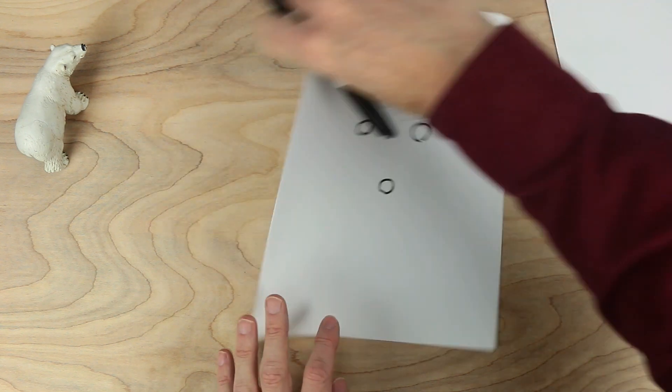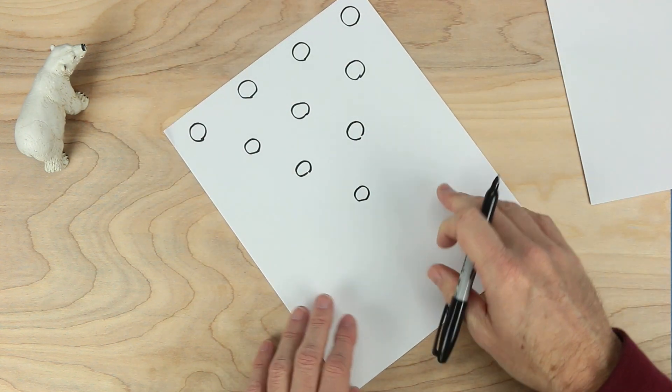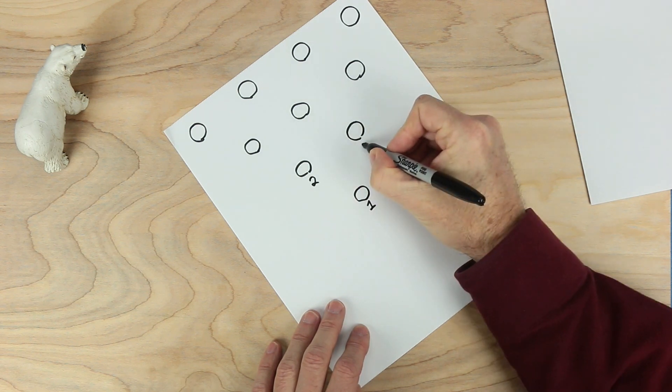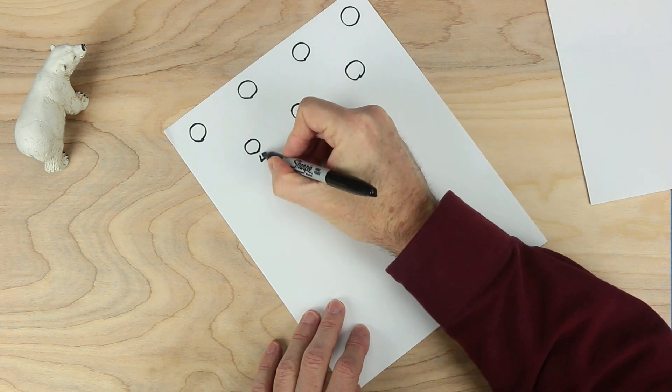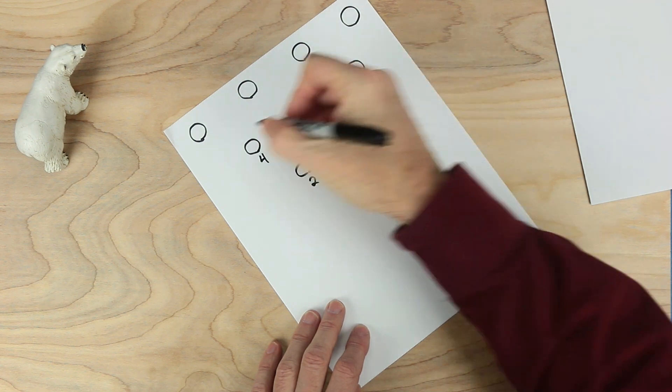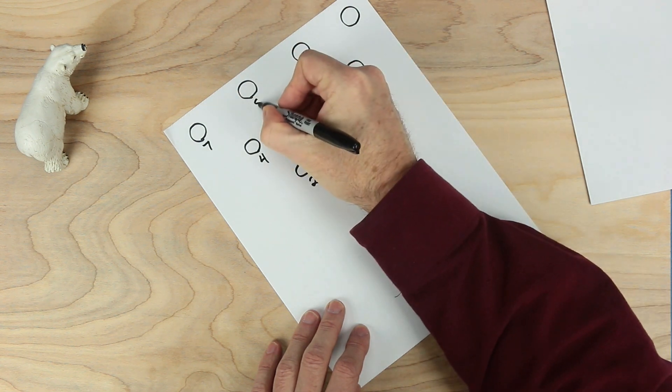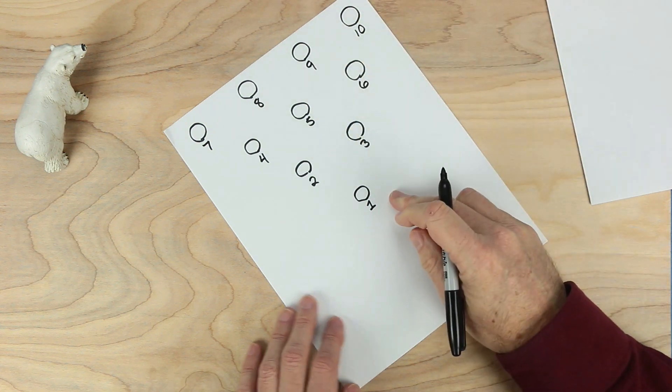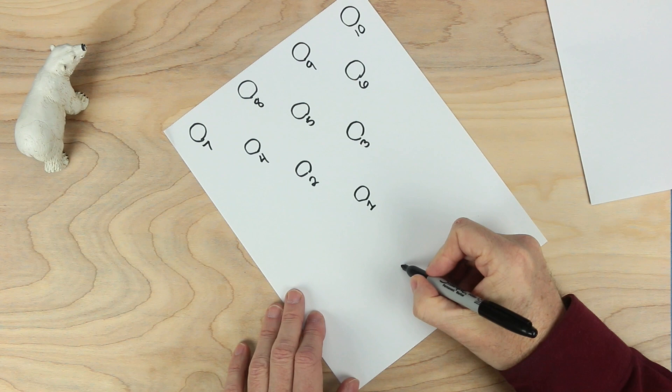Let's turn the paper and give these some numbers. This will be number one, two, three, four, five, six, seven, eight, nine, and ten. That's a great start for the board. Let's add a few more details.